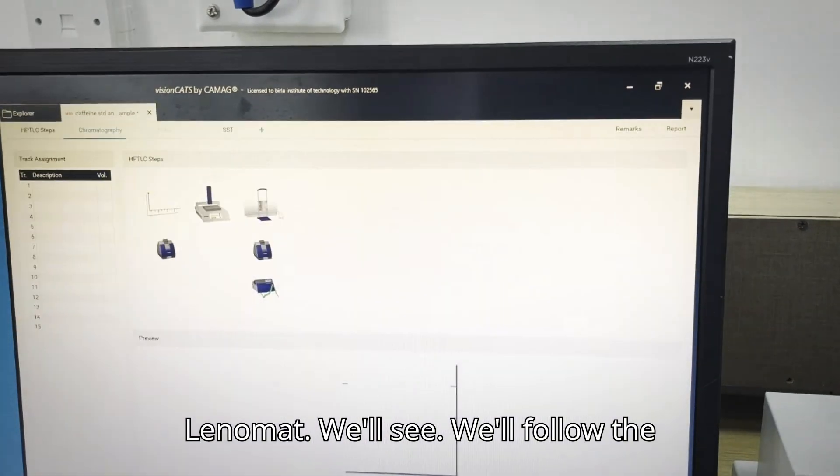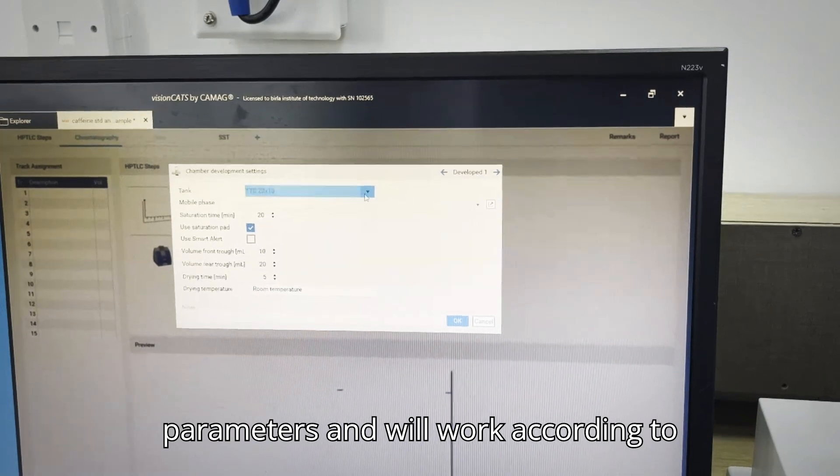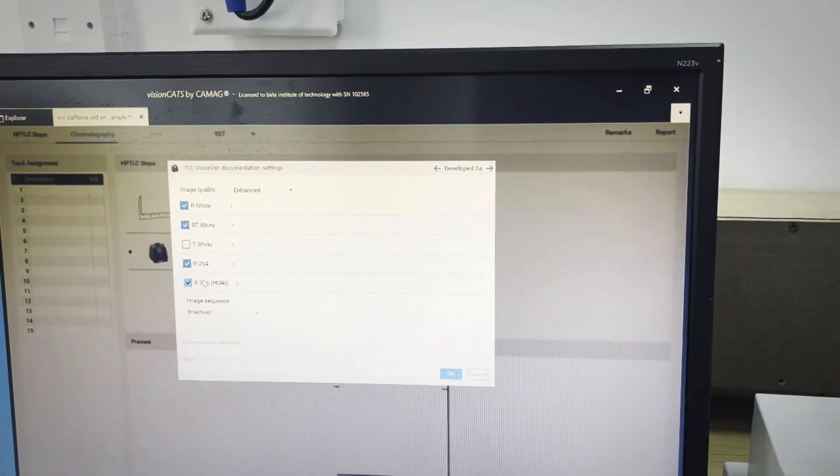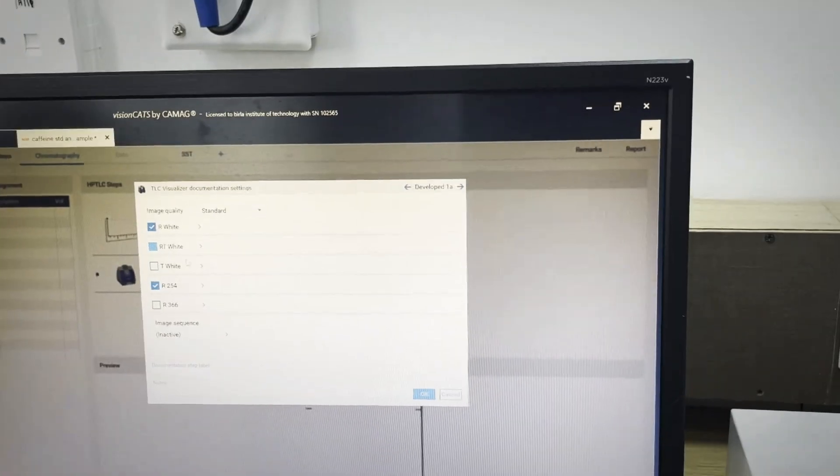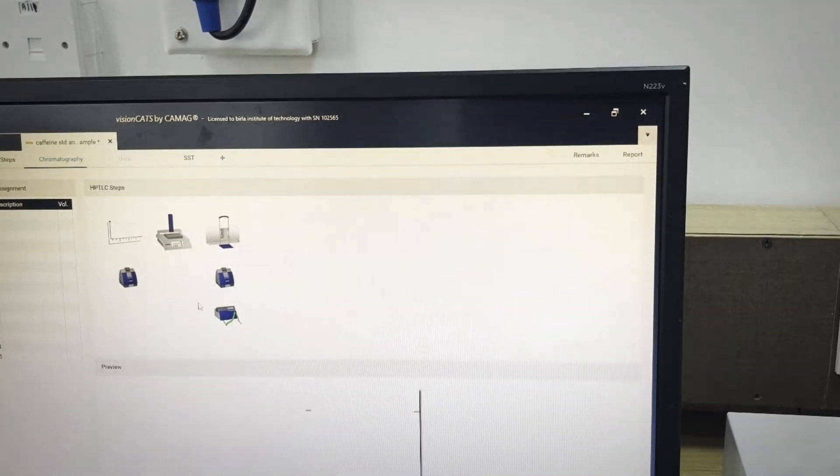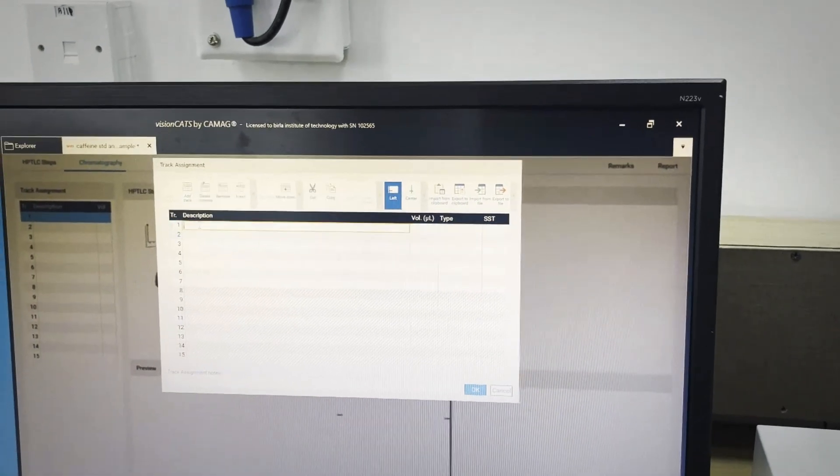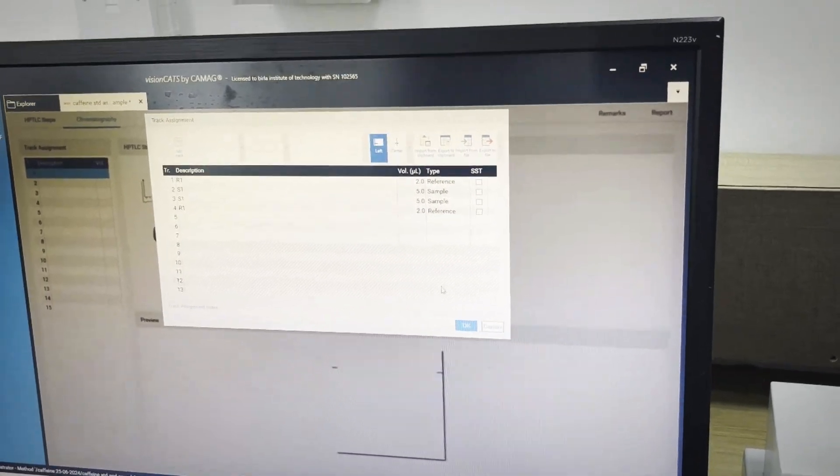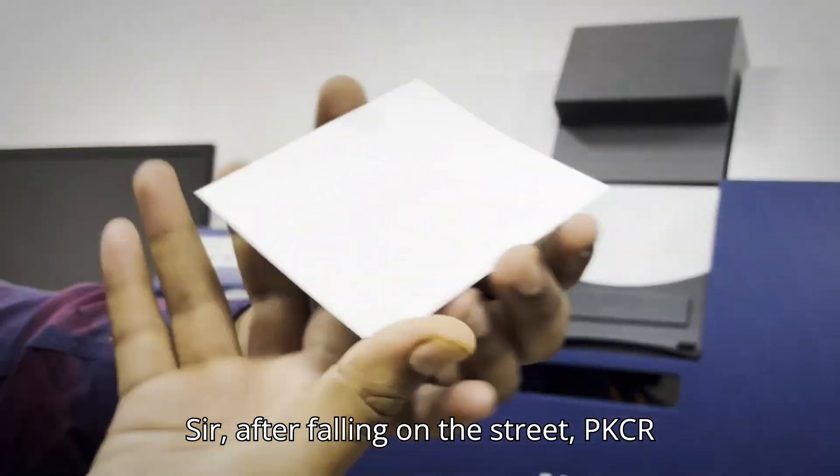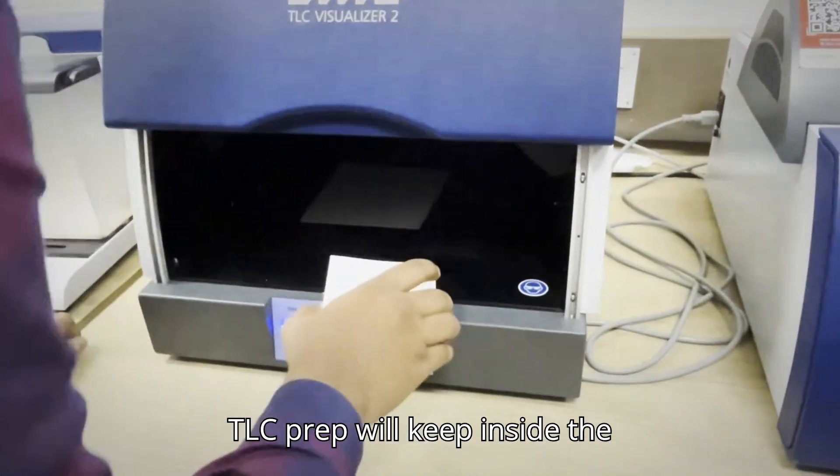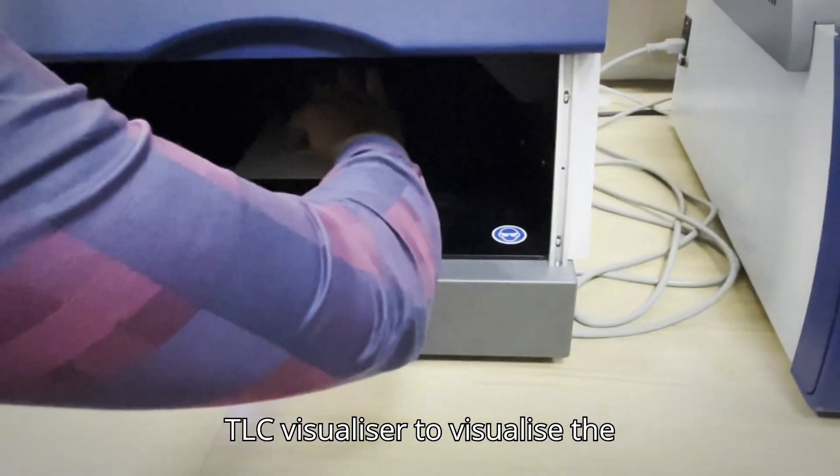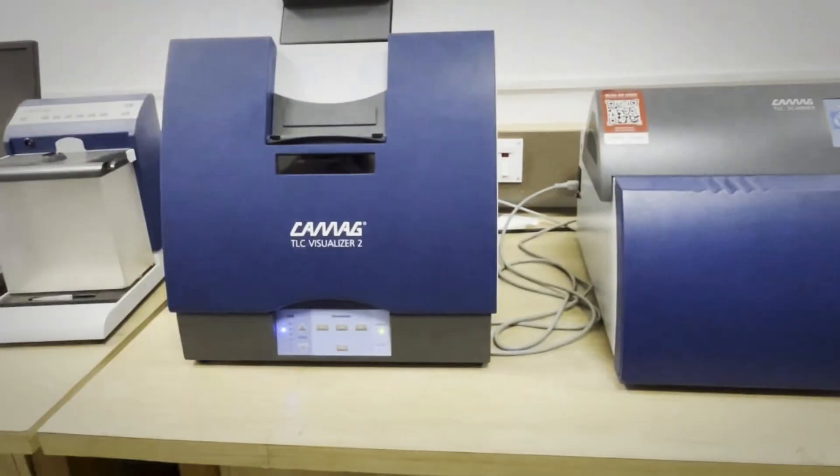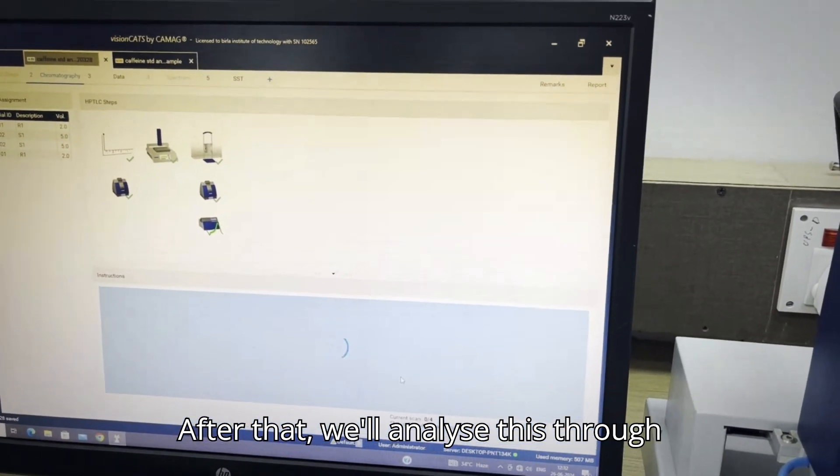Now we will move to the Linomat. We will follow the following parameters and we will work according to that as shown in the video. After following all the steps, you can see that this is the TLC plate. We will keep inside the TLC visualizer to visualize the plate. After that we will analyze this through the software.